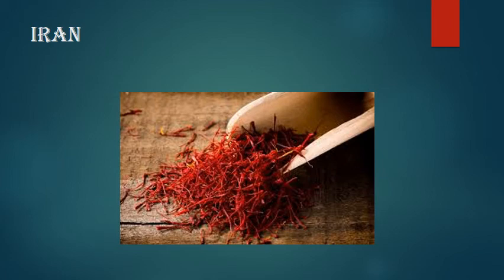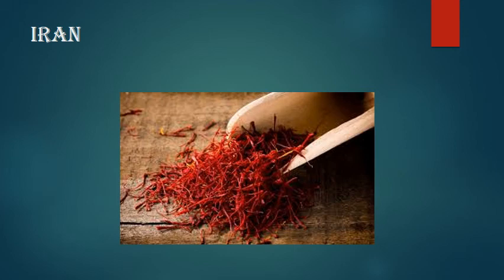The next country is Iran. Iran is famous for the production of saffron — in Hindi we call it kesar. Iran leads the world in the production of saffron and is the largest producer of saffron in the world.